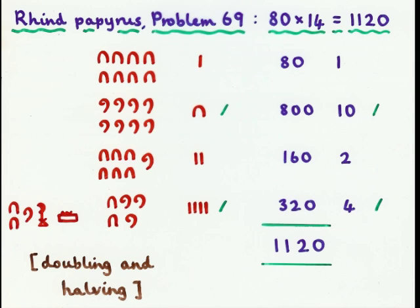Now, you're multiplying 80 by 14, so if you add the rows corresponding to 10 and 4, then you get the answer. It's this plus this, which is just this, which is 1120.